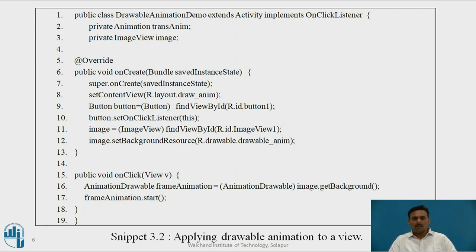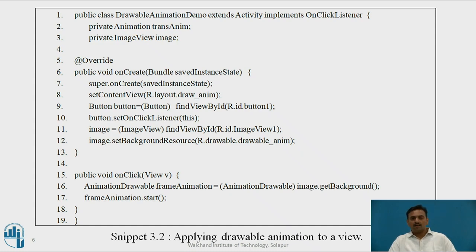This is the Android animation view code. In onCreate, a button is present, and on clicking it, the images are shown to the users. The background resource for the Android animation is provided. On the click event, the frame animation starts. As you can see in line numbers 15 to 17, the animation is played in the background.